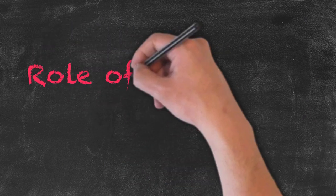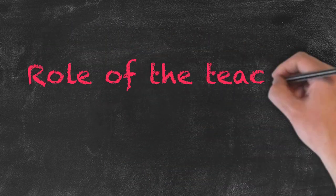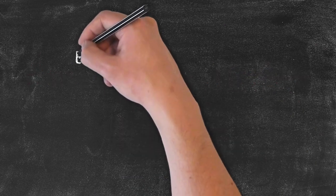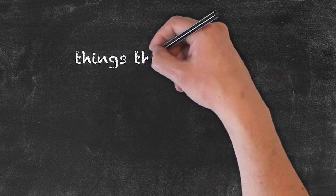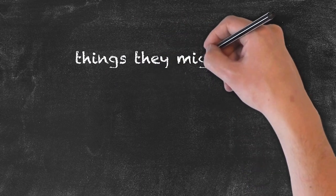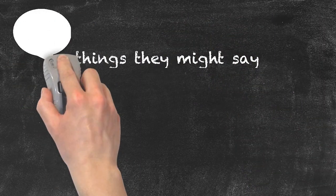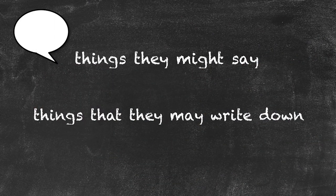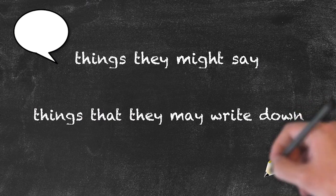So the role of the teacher within the classroom is going to be very wide and it will often change from moment to moment. In order to illustrate some of the things that the teacher could be doing at various times, we're going to use some of the things that they might say or some of the things that they may write down, and from those we'll have a look at the role of the teacher at that point in time.